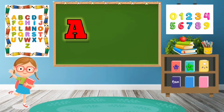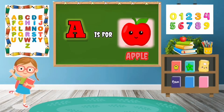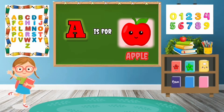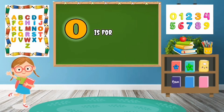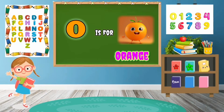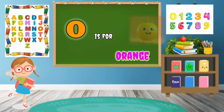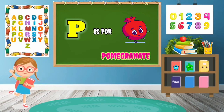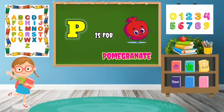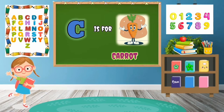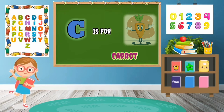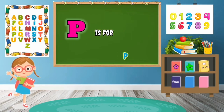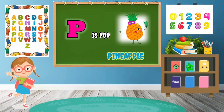A is for Apple — A-P-P-L-E, Apple. O is for Orange — O-R-A-N-G-E, Orange. P is for Pomegranate. C is for Carrot — C-A-R-R-O-T, Carrot. P is for Pineapple.